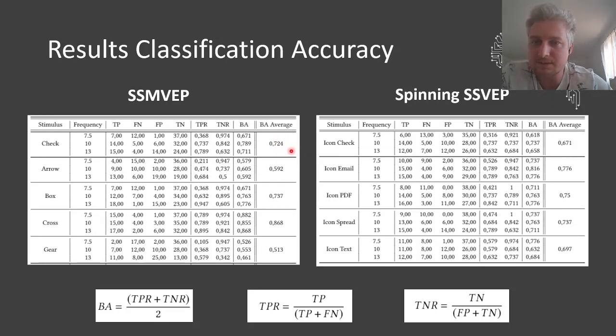And luckily, which was a great success, all the spinning stimuli were all above chance level. They scored comparable to our checkerboard stimulus, and some even better with 75% for the PDF icon.